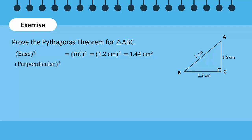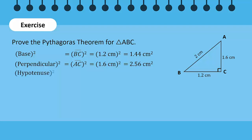The square of the perpendicular AC will be 1.6 cm², which is equal to 2.56 cm². The square of the hypotenuse AB will be 2 cm², which is equal to 4 cm².